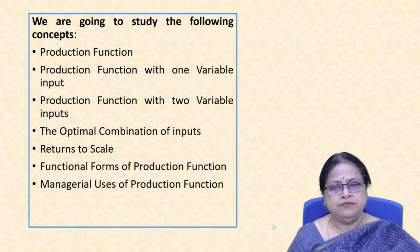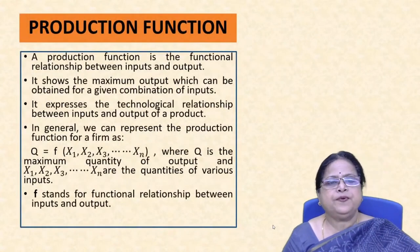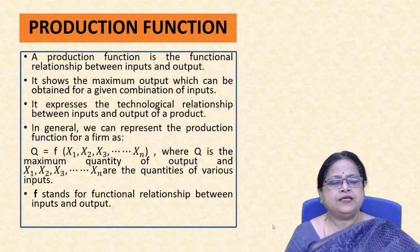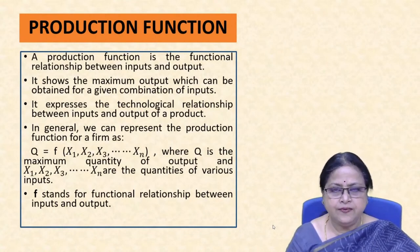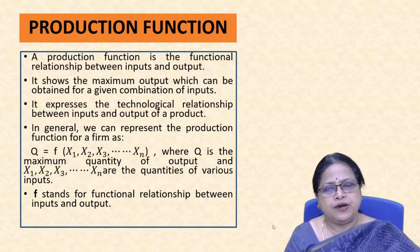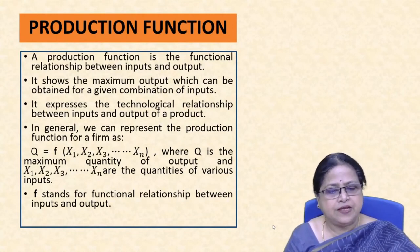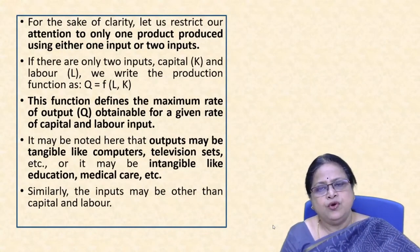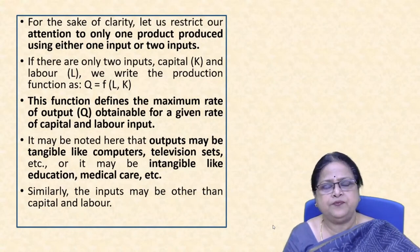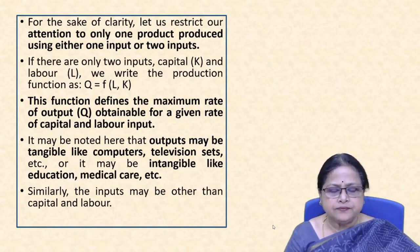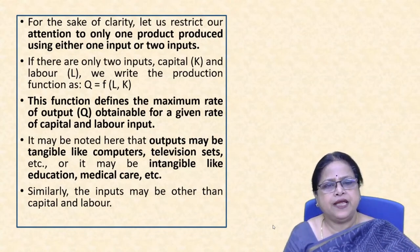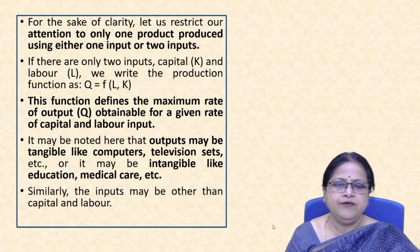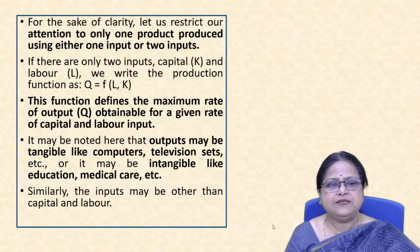The production function is a functional relationship. If we have n inputs x1 through xn, then q is a function of x1, x2, up to xn, where q is the maximum quantity of output. For clarity, we restrict attention to two inputs — labour and capital. With capital K and labour L, the production function is written as q = F(L, K), meaning output is a function of labour and capital.